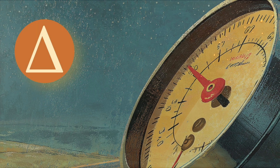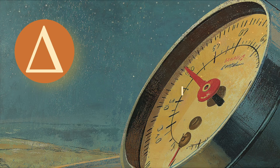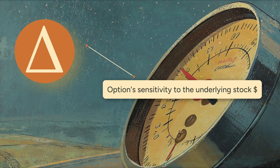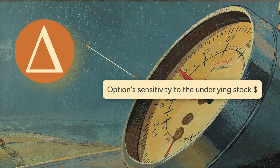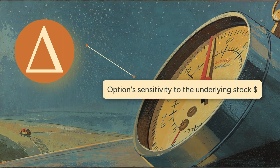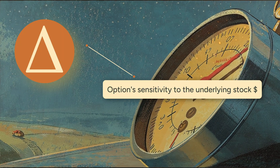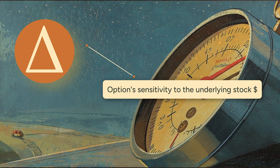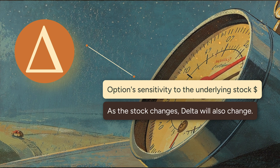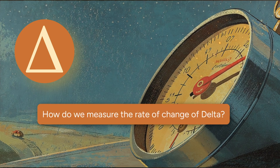Earlier we compared delta to a speedometer — it describes an option's sensitivity to the underlying stock price at this very second. But what happens if the market hits the gas? As the stock price moves, your delta also changes. That 0.5 delta won't stay 0.5 for very long. As the stock rises, your delta might climb to 0.6, then 0.7. This raises a new question: how do we measure the rate of change of delta itself? How do we measure this acceleration? For that, we need to meet the next Greek in our cast: Gamma.